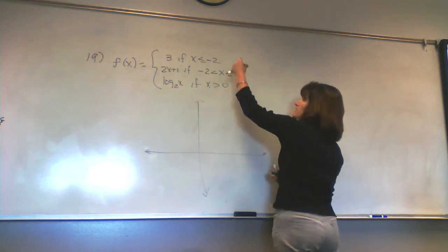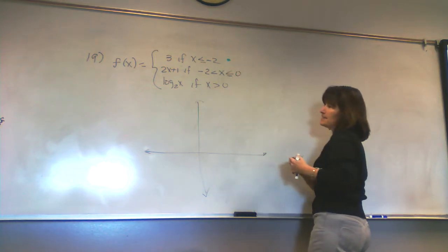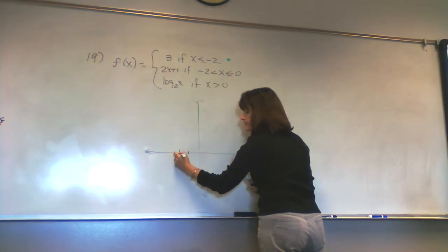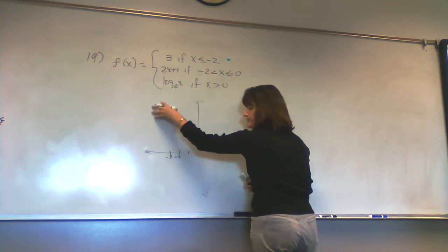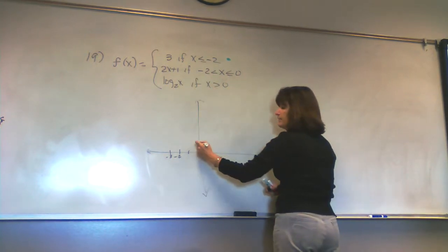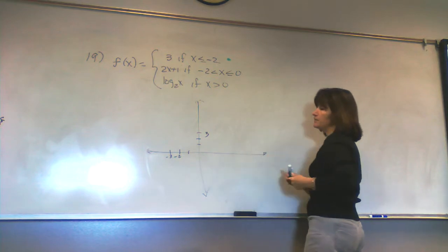So this piece, for instance, where x is less than or equal to negative 2, so we're talking about over here. Over here, the function is f of x equals 3, and f of x equals 3 is just a constant function.